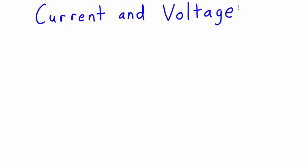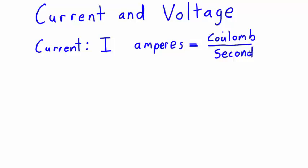So electrical current is represented by the symbol I, that's capital I, and its units are amperes, where an ampere is a coulomb per second. And to help you understand how this works, I'm going to show you a simulation.